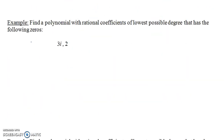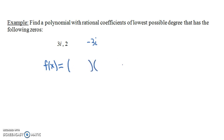Another example: find a polynomial with rational coefficients of lowest possible degree that has 3i and 2 as zeros. The fact that 3i is a zero means −3i will also have to be a zero. So if 3i, −3i, and 2 are all zeros of our polynomial, then the factored form would be (x−3i)(x+3i)(x−2). This is a degree 3 polynomial — it had to be at least degree 3, because having 3i as a zero required the conjugate pair.